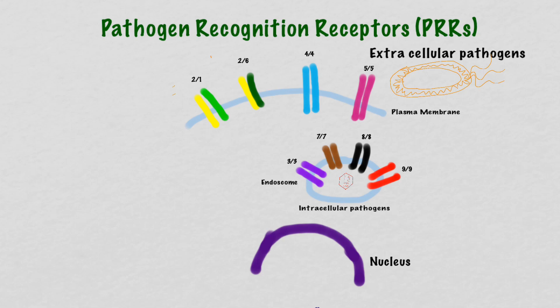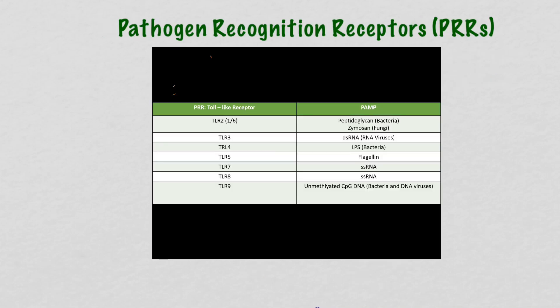TLR2, with either TLR1 or TLR6 as its binding partner, will recognize peptidoglycan of bacteria and zymosan of the cell wall of fungi. TLRs 3, 7, and 8 will all recognize double-stranded RNA from viruses. TLR4 will recognize LPS on gram-negative bacteria, while TLR5 recognizes the flagella of motile bacteria. Lastly, TLR9 recognizes unmethylated CpG DNA.